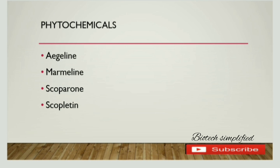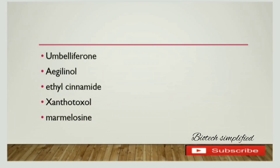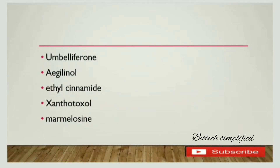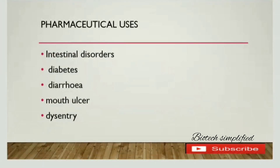The phytochemicals present in Aegle marmelos include aeglin, marmaline, scoparone, scopoletin, umbelliferone, aeglinol, ethylene cinamide, sandatoxol, and marmilosin. The pharmaceutical uses of this plant include treatment of intestinal disorders, diabetes, diarrhea, mouth ulcers, and dysentery.